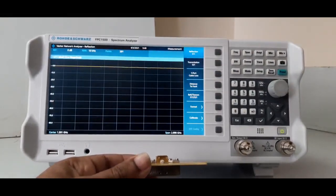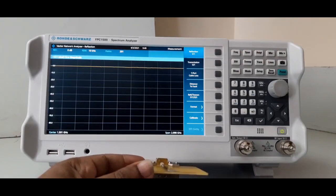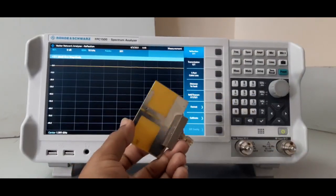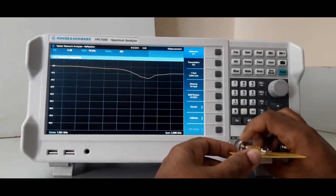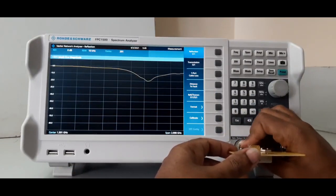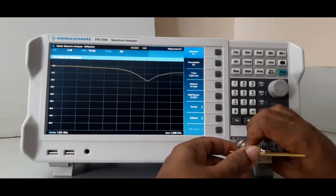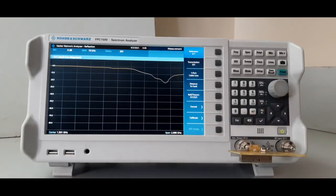Now it is in VNA mode, we can use it as a VNA or spectrum analyzer. Now I will connect this dipole antenna. This is designed for 2.5 gigahertz. Tight properly, do not lose contact.